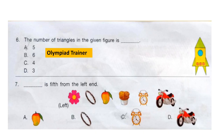Question 6: The number of triangles in the given figure is dash. Count the number of triangles and select your answer. The correct answer is option A: 5.